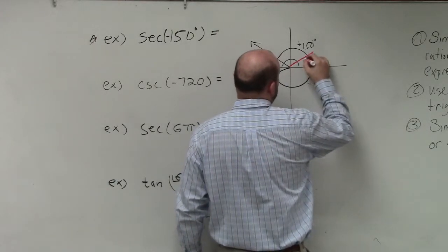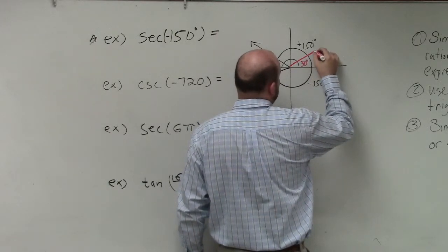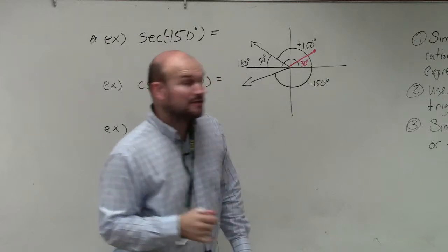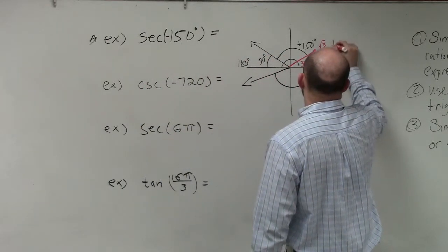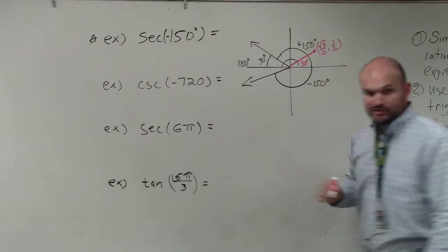I'm going to look at the angle in the first quadrant at 30 degrees. And the angle in the first quadrant at 30 degrees is square root of 3 over 2 comma 1 half.